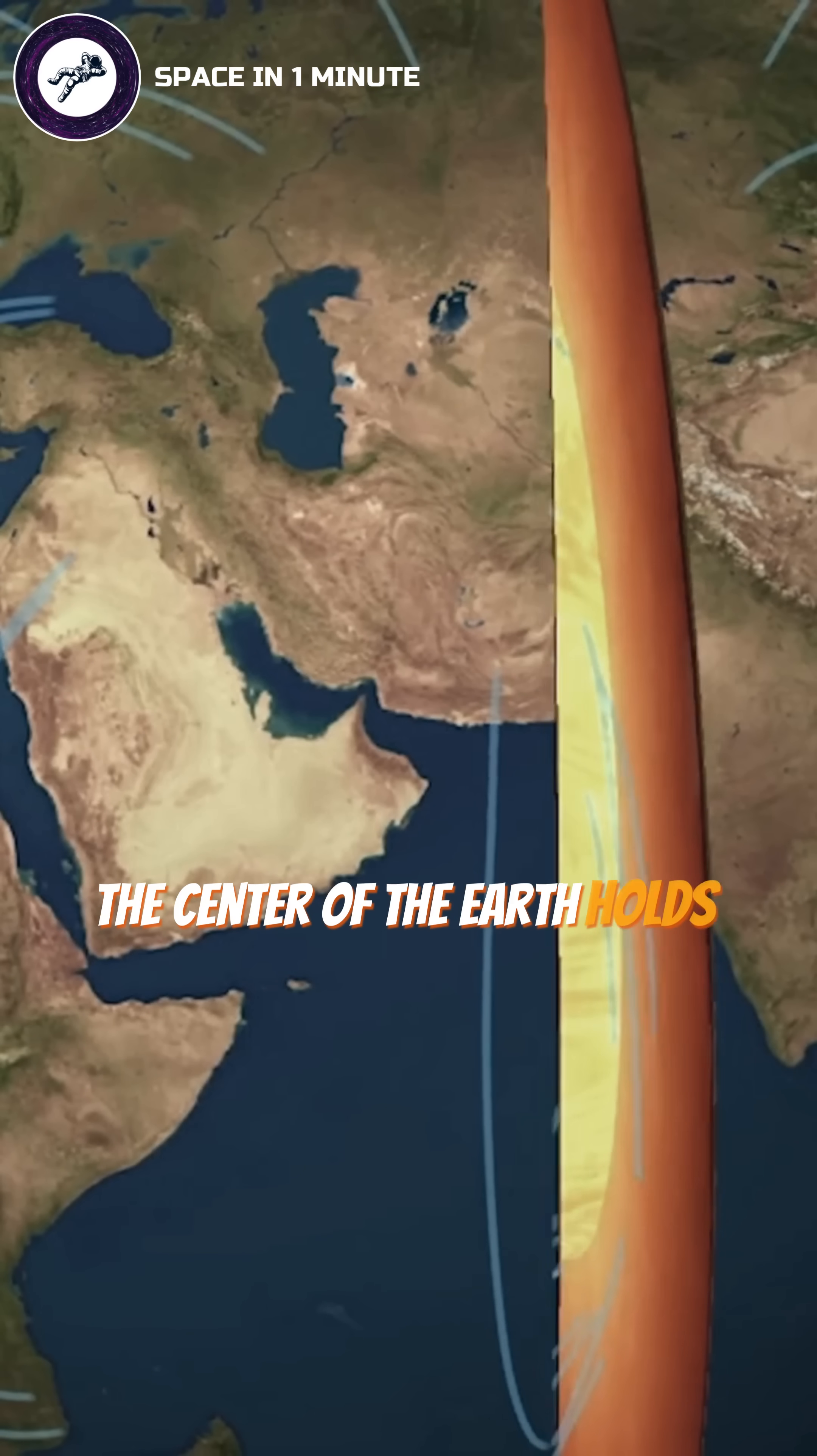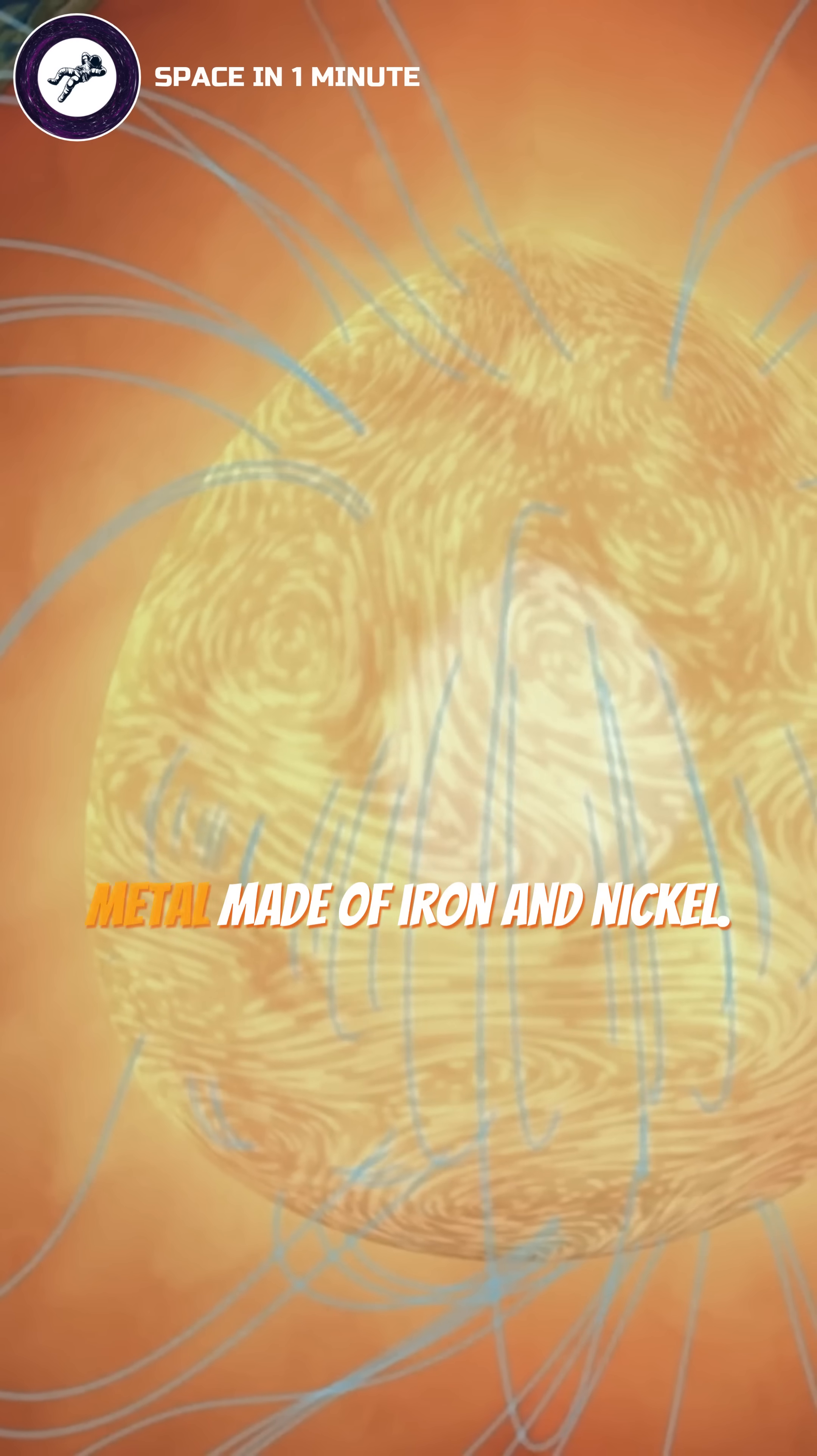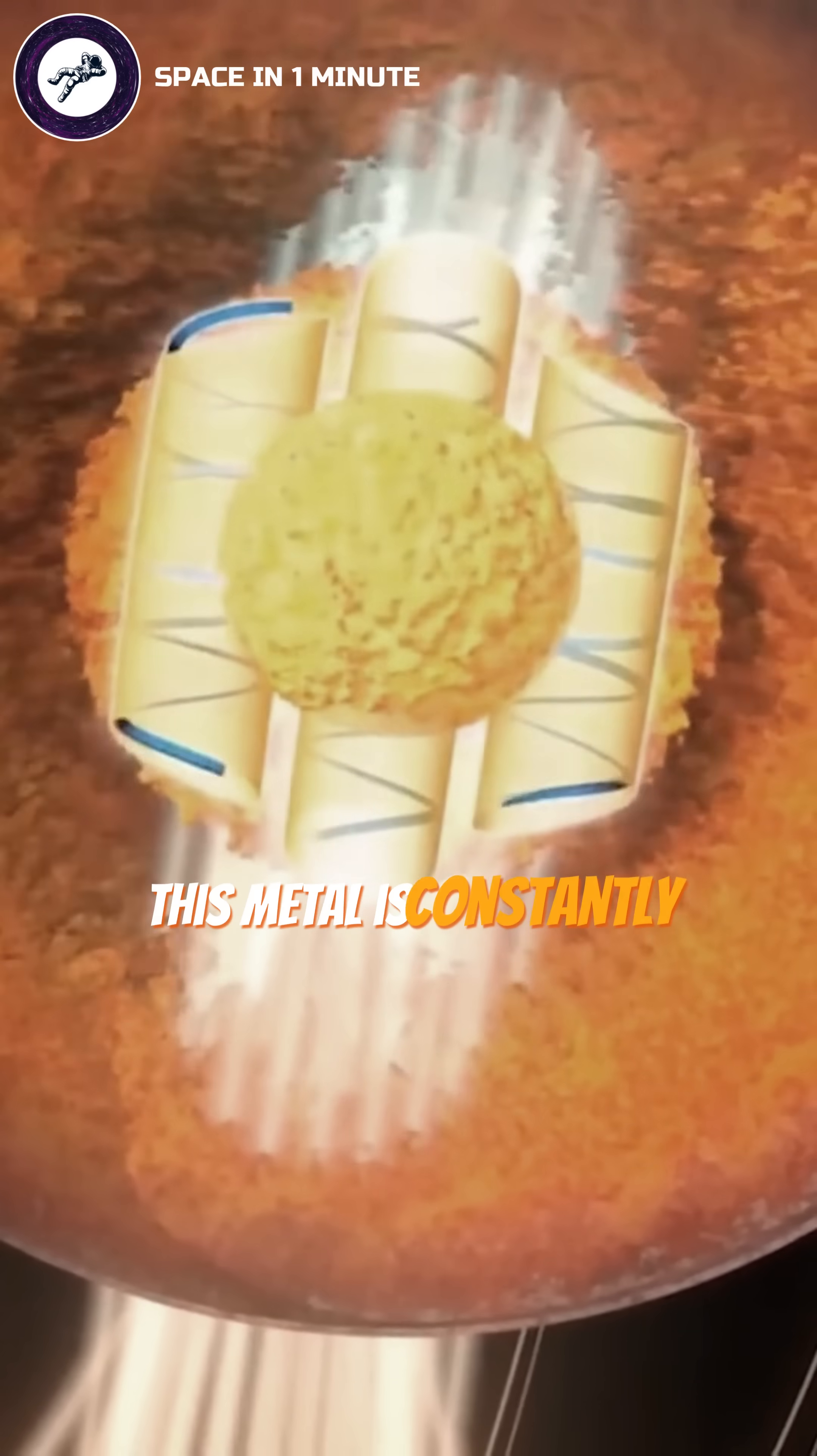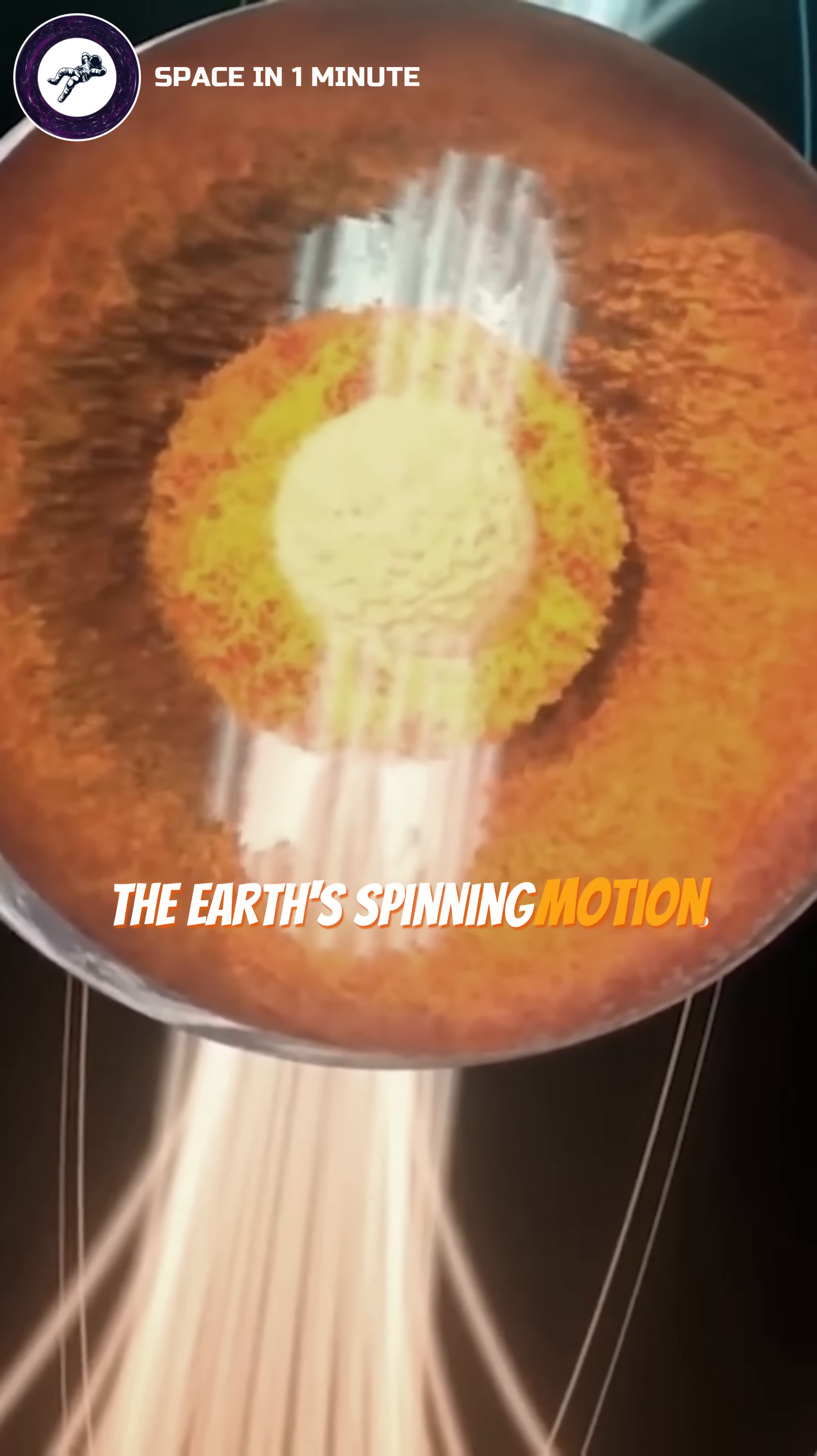The center of the Earth holds the outer core, a massive layer of hot liquid metal made of iron and nickel. This metal is constantly moving, stirred by the heat from the inner core and the Earth's spinning motion.